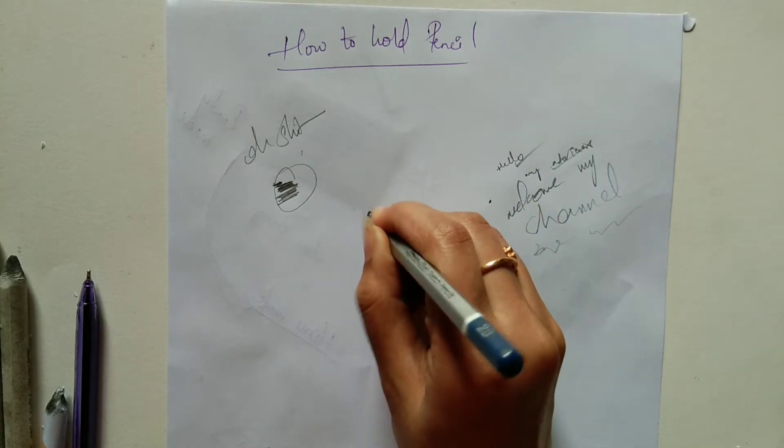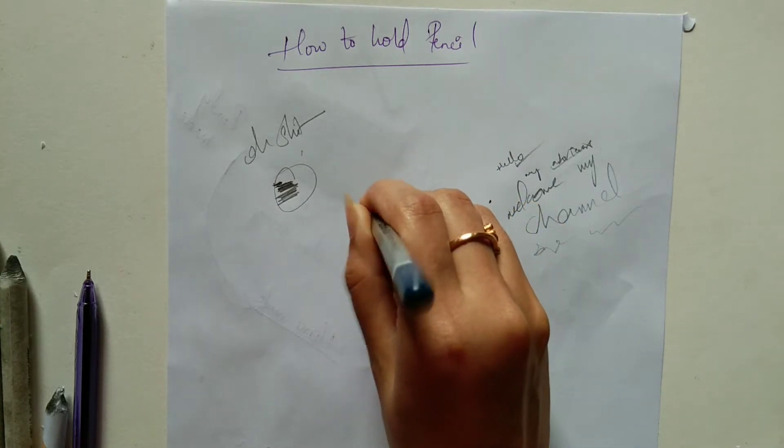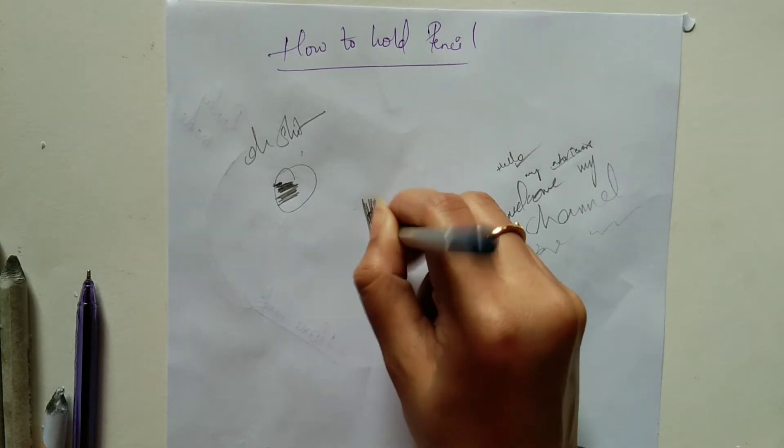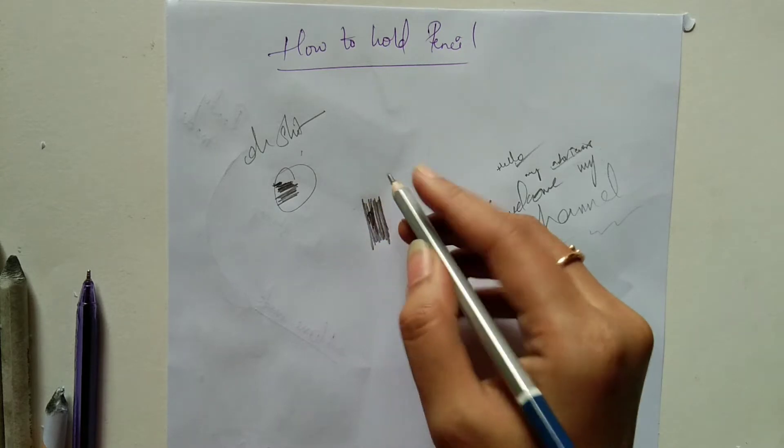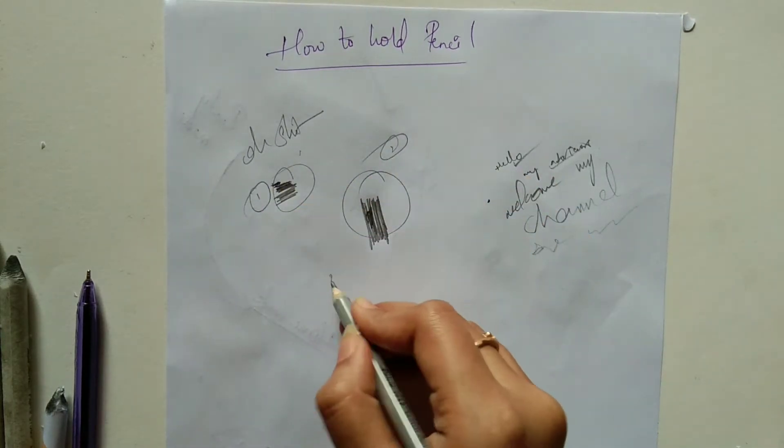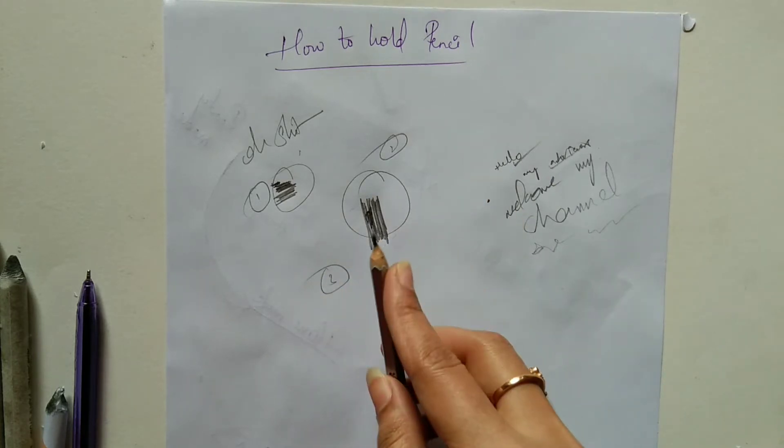This will give uneven tones on the paper. You can see the same thing is happening because we are not able to see below. We'll apply more pressure on one area and less pressure on another area.